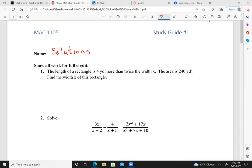Okay, so today we're going to look at the solutions for the study guide. Number one, start off with question number one. The length of a rectangle is four yards more than twice the width. The area is 240 square yards. Find the width x of this rectangle.